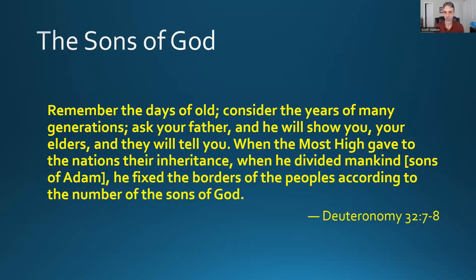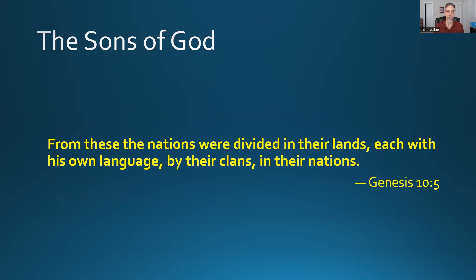There's one more passage in Deuteronomy with the exact phrase 'the sons of God' as written in Genesis 6. Deuteronomy 32:7-8: 'Remember the days of old, consider the years of many generations... when the Most High gave to the nations their inheritance, when he divided mankind, he fixed the borders of the peoples according to the number of the sons of God.' Who's being talked about? Something that happened in olden days, many generations ago, when God divided mankind into nations — and the number used is the sons of God. This is referring to Genesis chapter 10, after the tower of Babel.